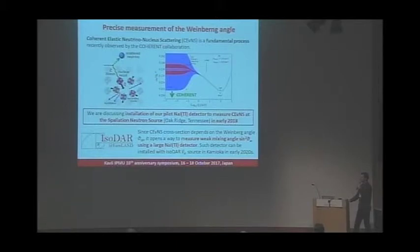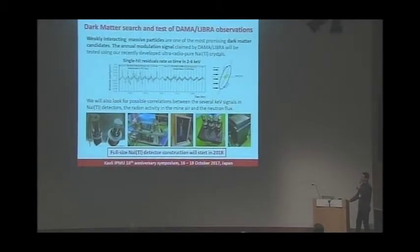Looking further into the future, there is a possibility that the ISODAR neutrino source facility will be built in Kamioka in the early 2020s. But the first and main purpose of developing these crystals was the dark matter search, and in particular the test of the DAMA/LIBRA observations. They claim that they observe the annual modulation of dark matter. First phase will start next year with 54 kilograms of sodium iodide crystals at Kamioka underground laboratory.